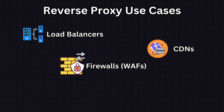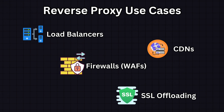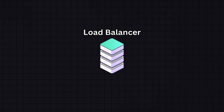Another example is web application firewalls, which are positioned in front of web applications. They inspect incoming traffic to block hacking attempts, filter out unwanted traffic, and protect applications from common web exploits. Additionally, some reverse proxies handle SSL offloading — managing the encryption and decryption of SSL/TLS traffic, offloading that task from web servers to optimize their performance. Load balancers are perhaps the most popular use case of proxy servers — check out the next video for a more in-depth look at load balancers and the specific algorithms used in them.